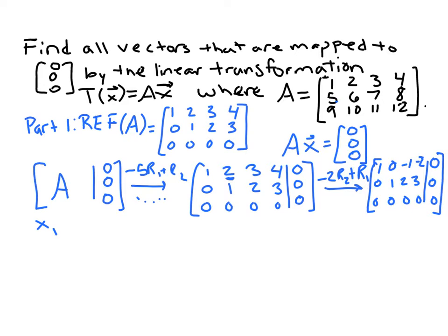So the first row says x1 minus x3 minus 2 times x4 is equal to 0. This implies that x1 is equal to x3 plus 2x4.